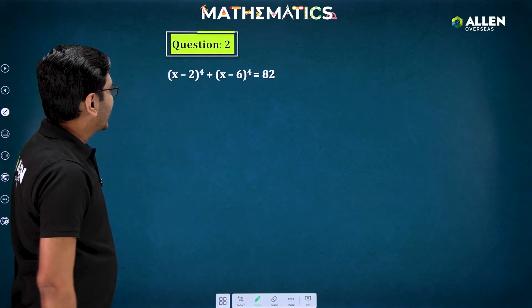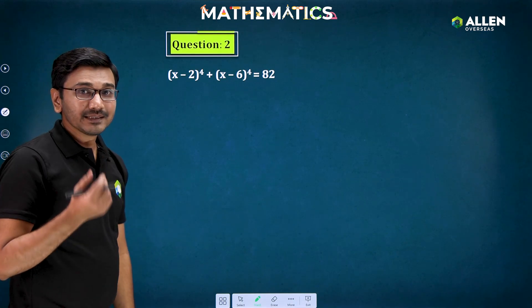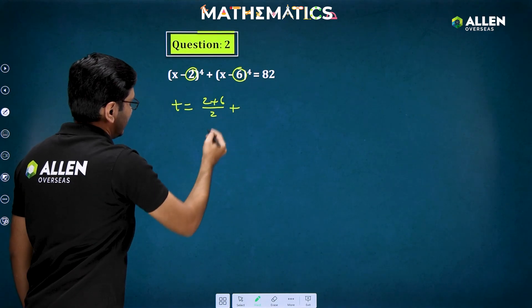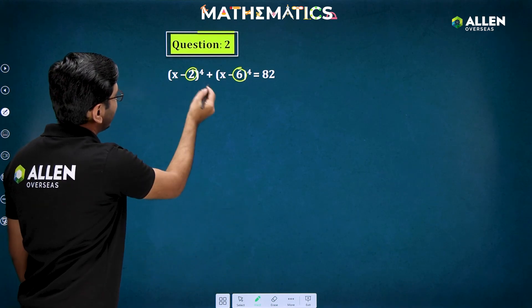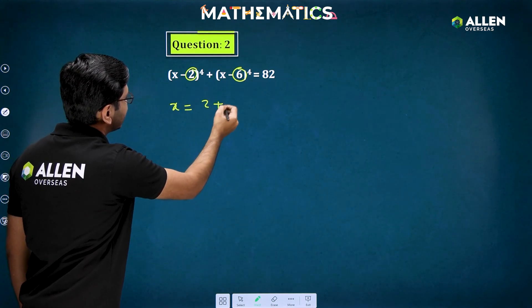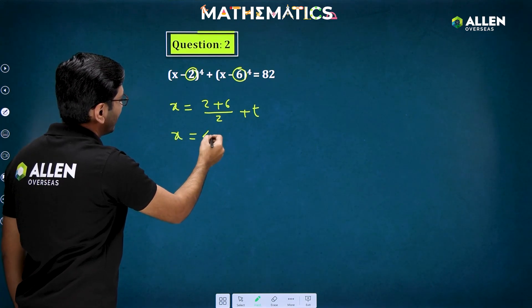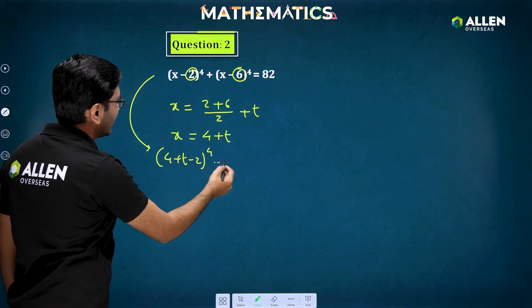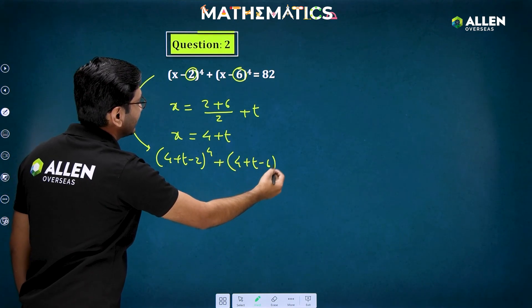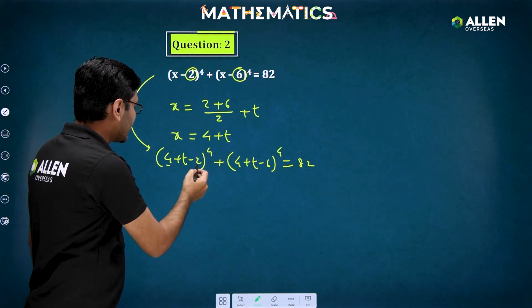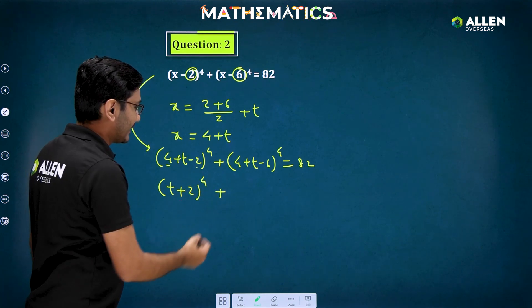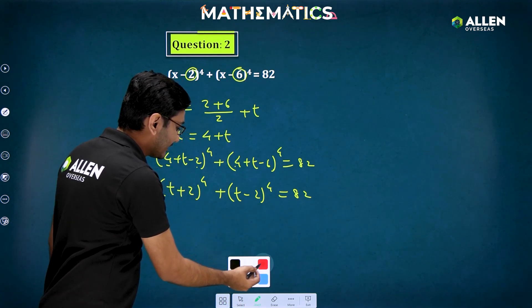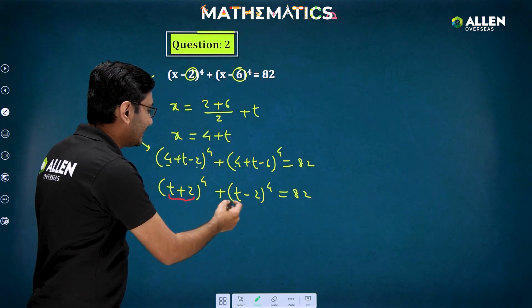The question is (x - 2)⁴ + (x - 6)⁴ = 82. Our substitution gives x = (2 + 6)/2 + t = 4 + t. Substituting, the first term becomes (4 + t - 2)⁴ = (t + 2)⁴ and the second term becomes (4 + t - 6)⁴ = (t - 2)⁴, so we have (t + 2)⁴ + (t - 2)⁴ = 82. Notice the first bracket gives t + 2 and the second gives t - 2 — they differ only by a sign change.